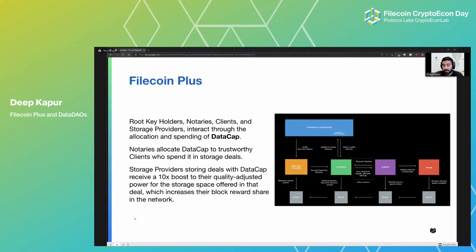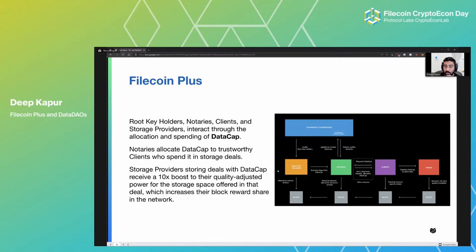In the world of Filecoin Plus, we have different stakeholders — you can see them in colored boxes on screen: community governance, root key holders, notaries, clients, storage providers, and miners. Root key holders, notaries, clients, and storage providers interact through the allocation and spending of a resource called data cap.